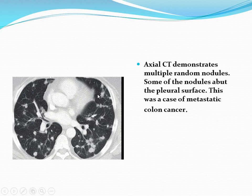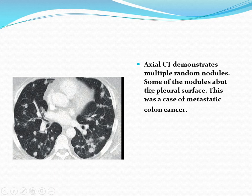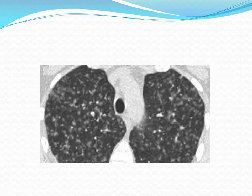Keep in mind, whenever you see a small vessel leading to the nodule — vessel leading to the nodule — this is very suggestive of metastasis. Metastasis means blood-borne spread. This is also multiple small nodules distributed randomly throughout both lungs.